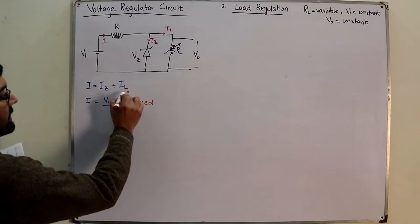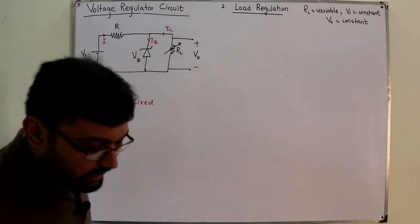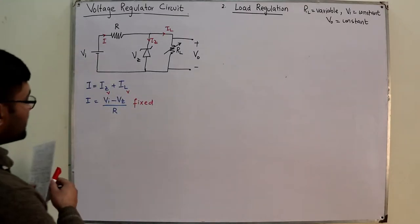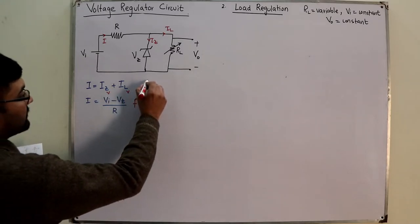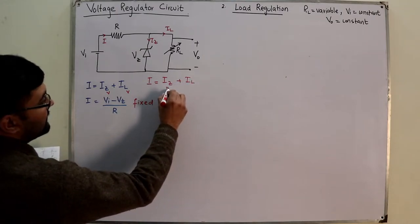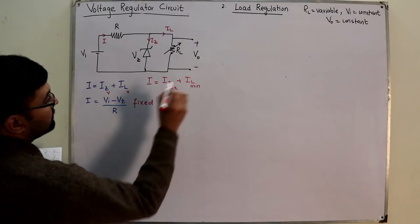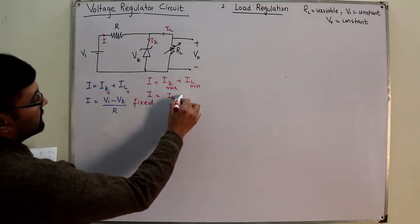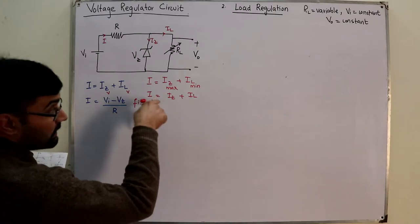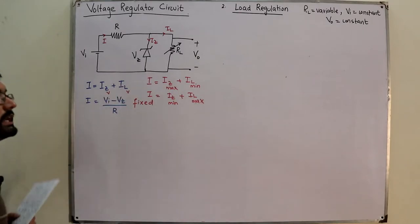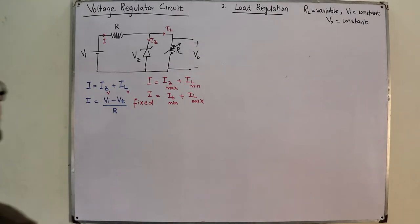Since IZ is variable, we can have maximum and minimum values. From I = IZ + IL: when IZ is maximum, IL is minimum; and when IZ is minimum, IL is maximum.